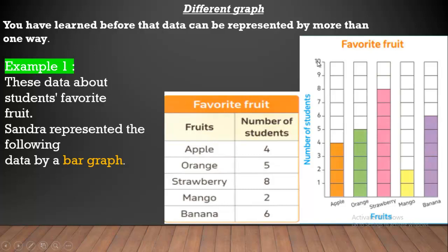Vertically, we can write the number of students. Like apple, we have 1, 2, 3, 4 students, and orange 1, 2, 3, 4, 5, strawberry 8, and mango 2, banana 6.